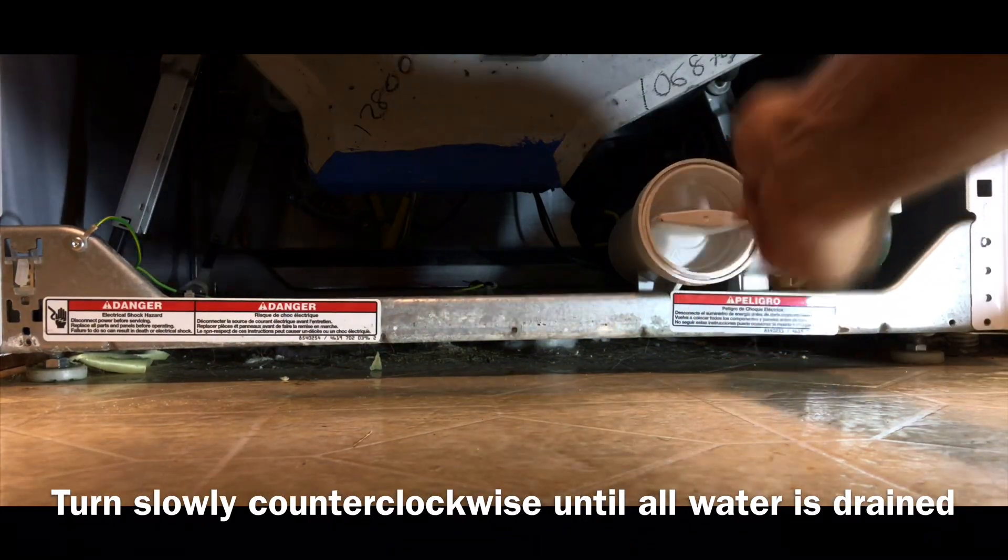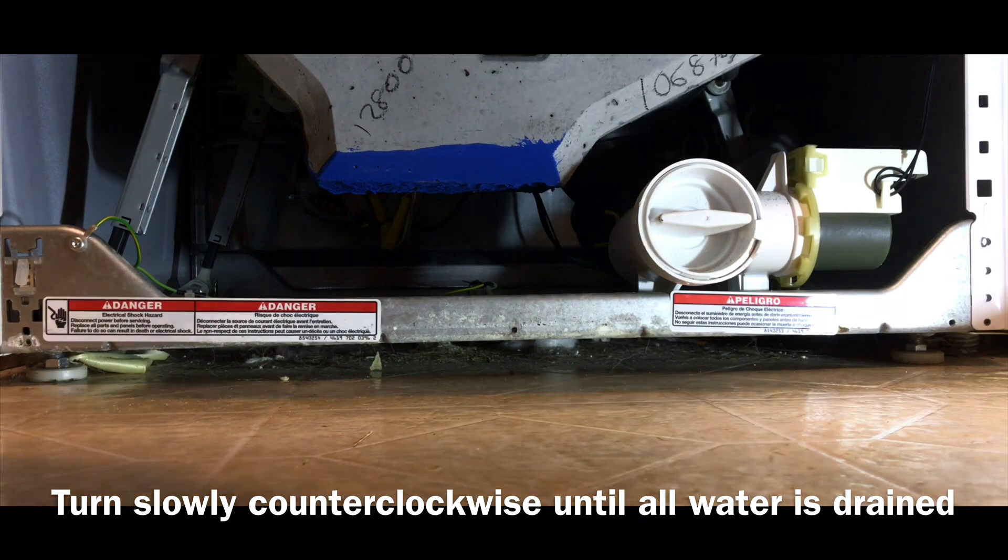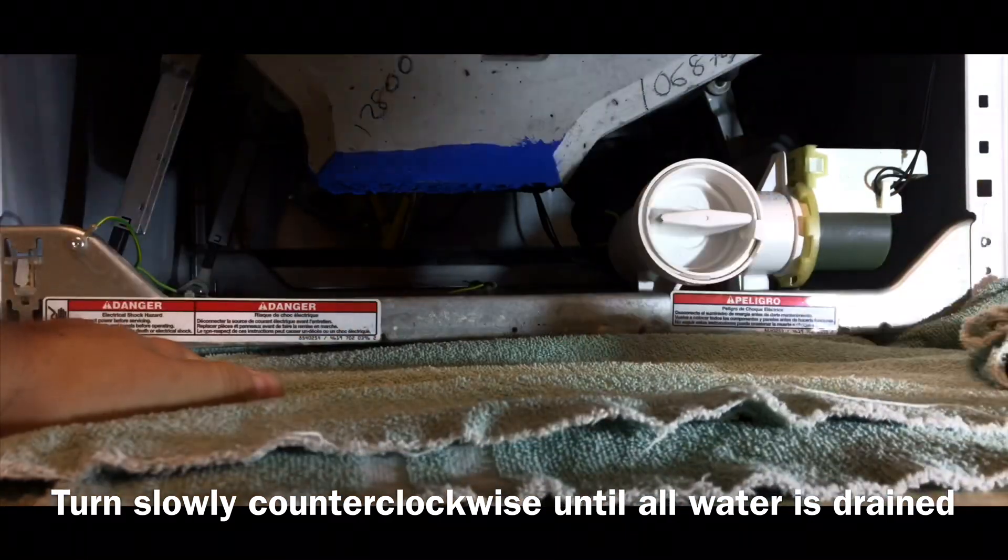Let's take the last one out. There you go. Now remove the lid. Let's take this out. This is the filter for the pump. Let's take it out counterclockwise. Put some stuff down because it's going to drip some water.